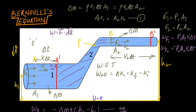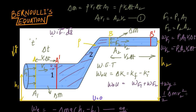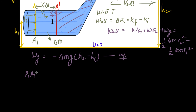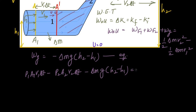So the work done by all three forces equals the change in kinetic energy: work done by F1 plus work done by F2 plus work done by gravity equals half delta m times v2 squared minus half delta m times v1 squared. Substituting: P1 A1 v1 delta t minus P2 A2 v2 delta t minus delta m g (h2 minus h1) equals half delta m (v2 squared minus v1 squared).